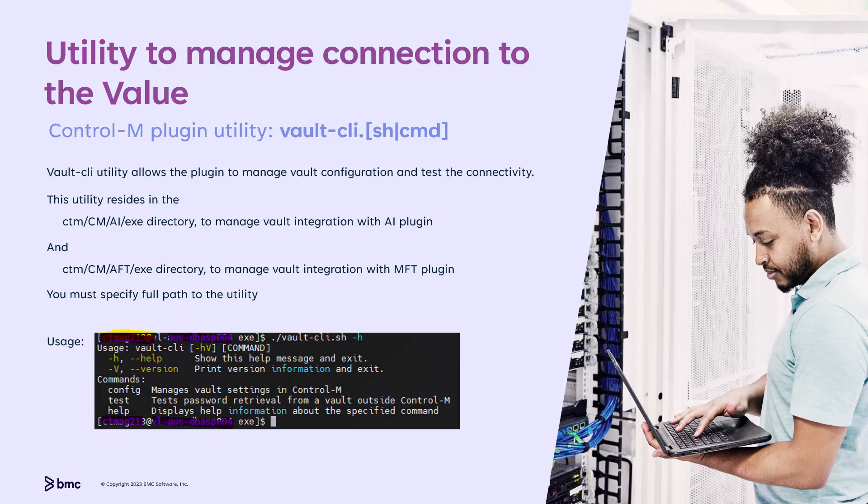Integration with Vault Tools is specific to each plugin — each plugin needs to configure and manage the connection with the Vault Tools. The plugins that support Vault integration include a Vault CLI utility to manage the integration. Vault CLI provides options to update, display, and delete configuration settings. Additionally, a test option is provided to validate the connection and accuracy of the current settings.